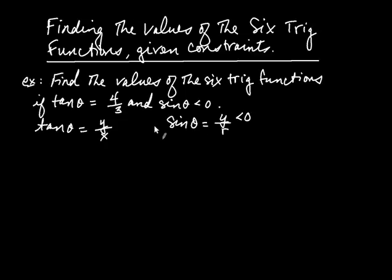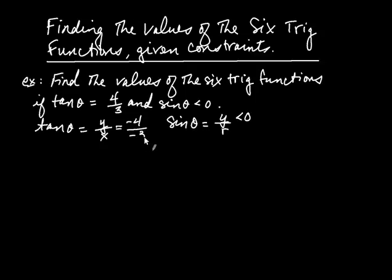What that means is y has to be less than zero. But tangent is four-thirds, which is a positive number. The only way you're going to get a positive result if y is negative is if x is negative as well. So I can choose y to be negative four and x to be negative three. After all, negative four divided by negative three is four-thirds, and sine of the angle would be less than zero. So x is negative three and y is negative four.